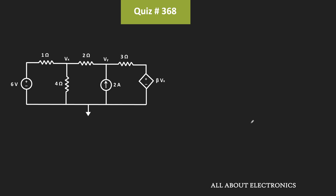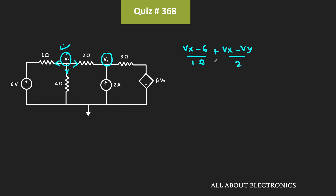This is a very simple question and to find the value of β, we will apply the KCL at these two nodes. First of all, let us apply the KCL at this node. Here there are three outgoing currents and the summation of all three outgoing currents will be equal to zero. That means: (Vx − 6) divided by 1 Ohm, plus (Vx − Vy) divided by 2, plus (Vx − Vy) divided by 4, should be equal to zero.